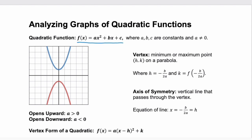Recall our quadratic function: that's a function in the form ax² + bx + c, where a cannot be zero or we don't have a quadratic anymore. This blue graph is a quadratic that opens upward — we know it opens upward because the leading coefficient a is greater than zero. When a is negative, it opens downward, like this red quadratic.